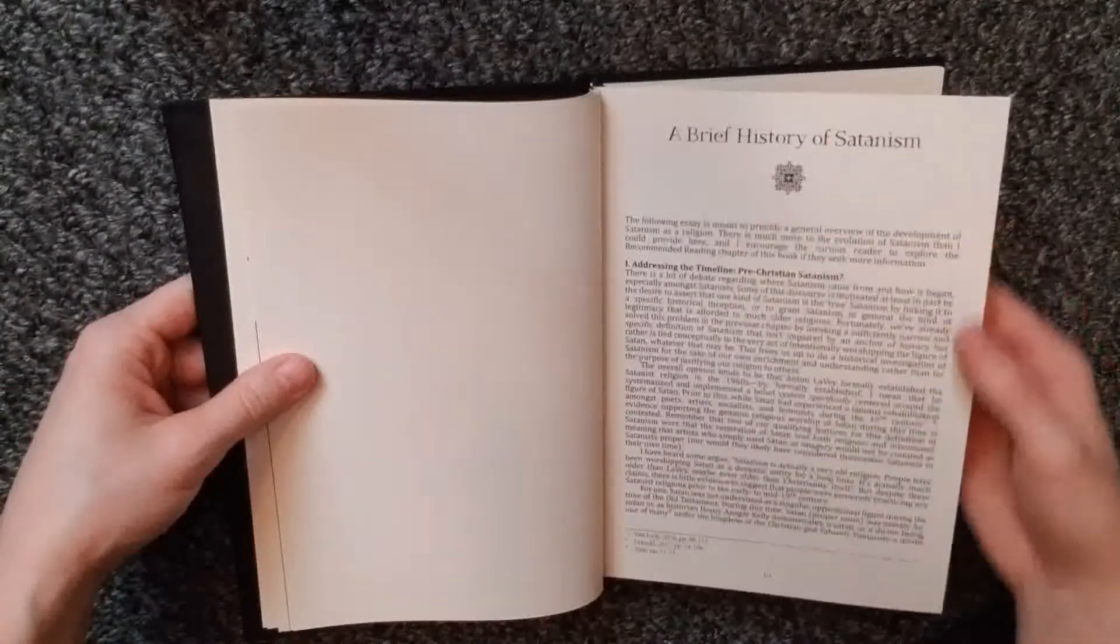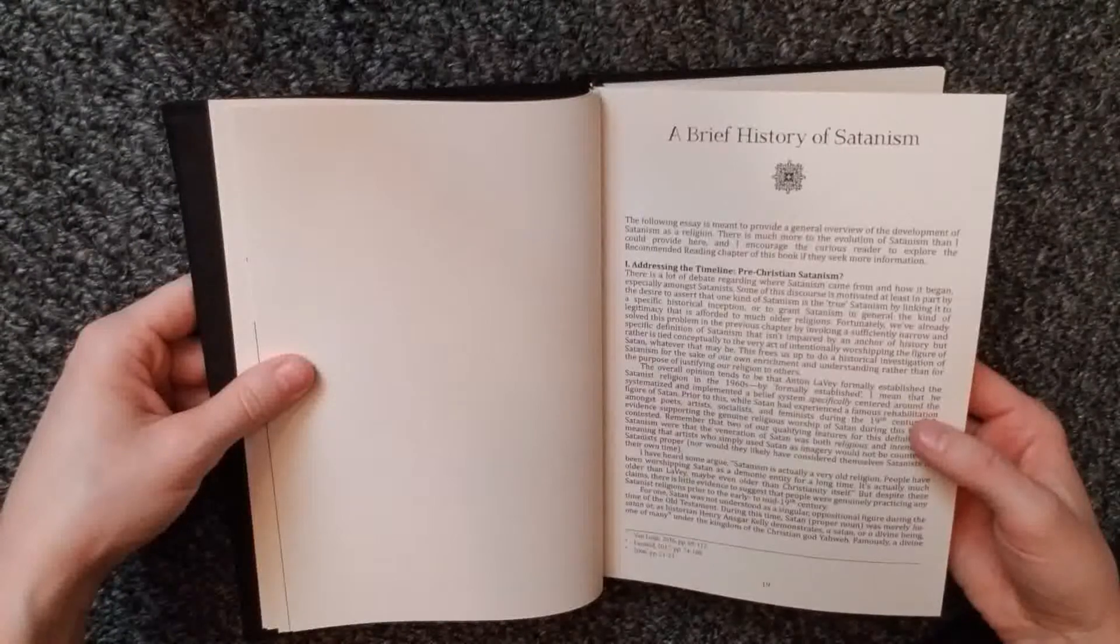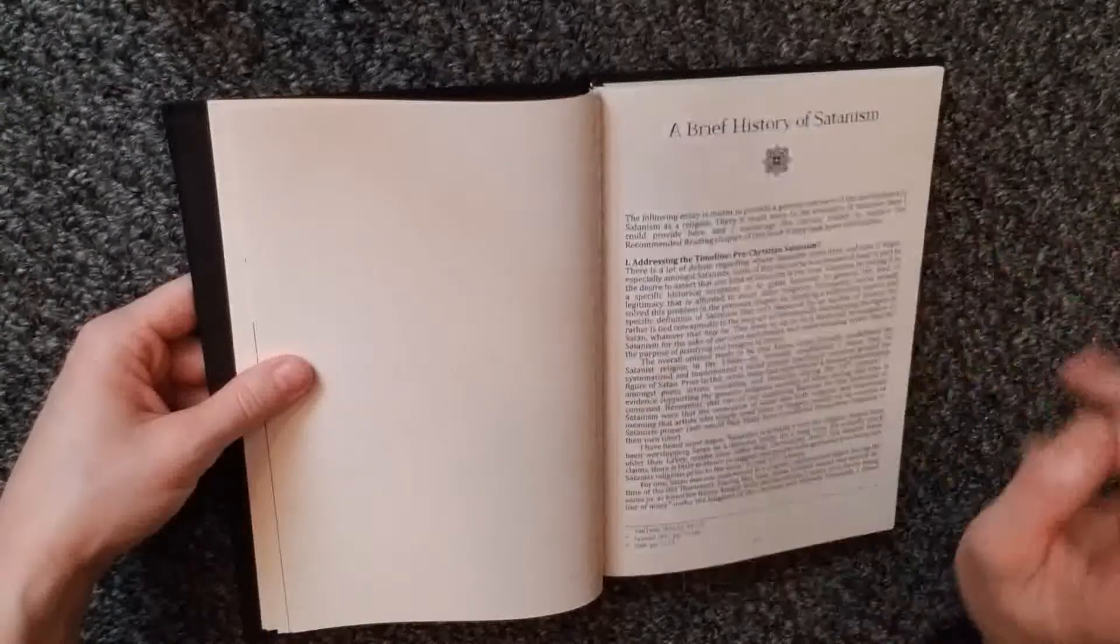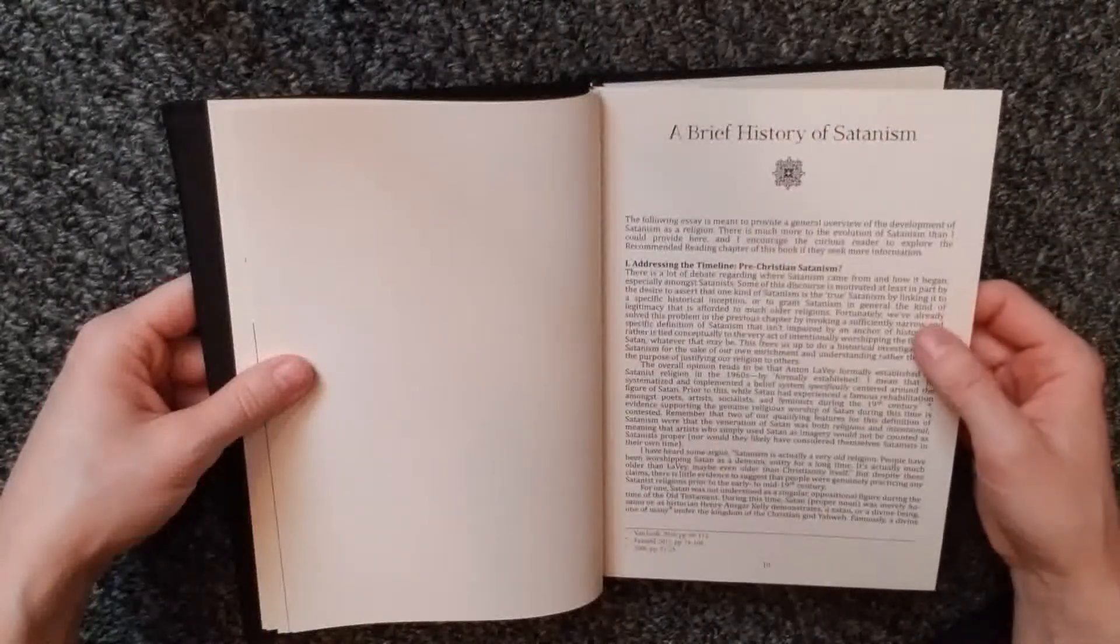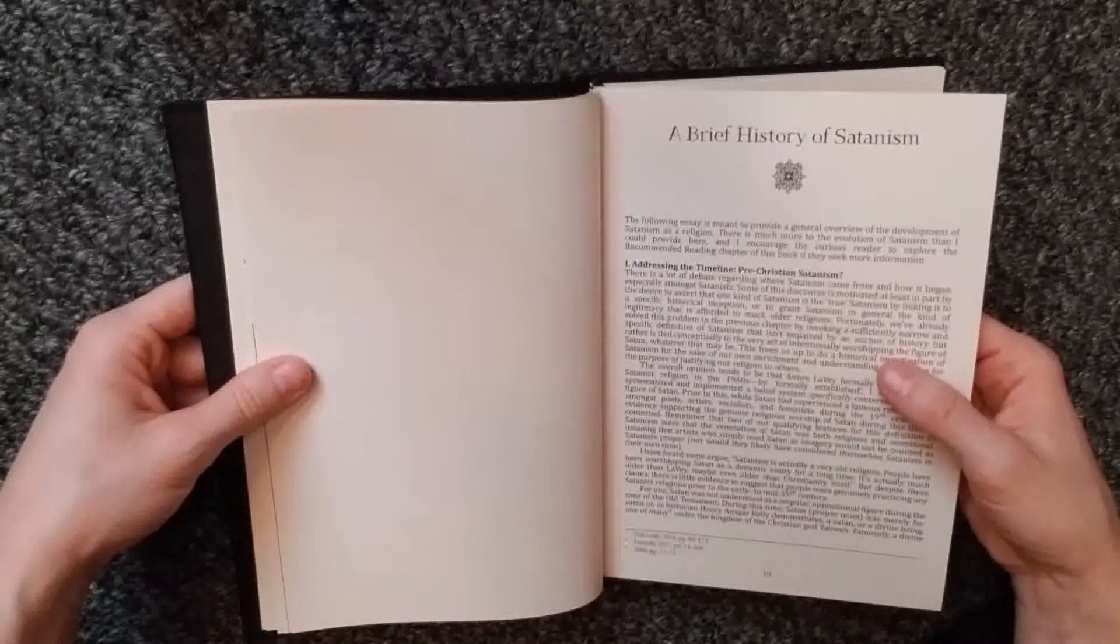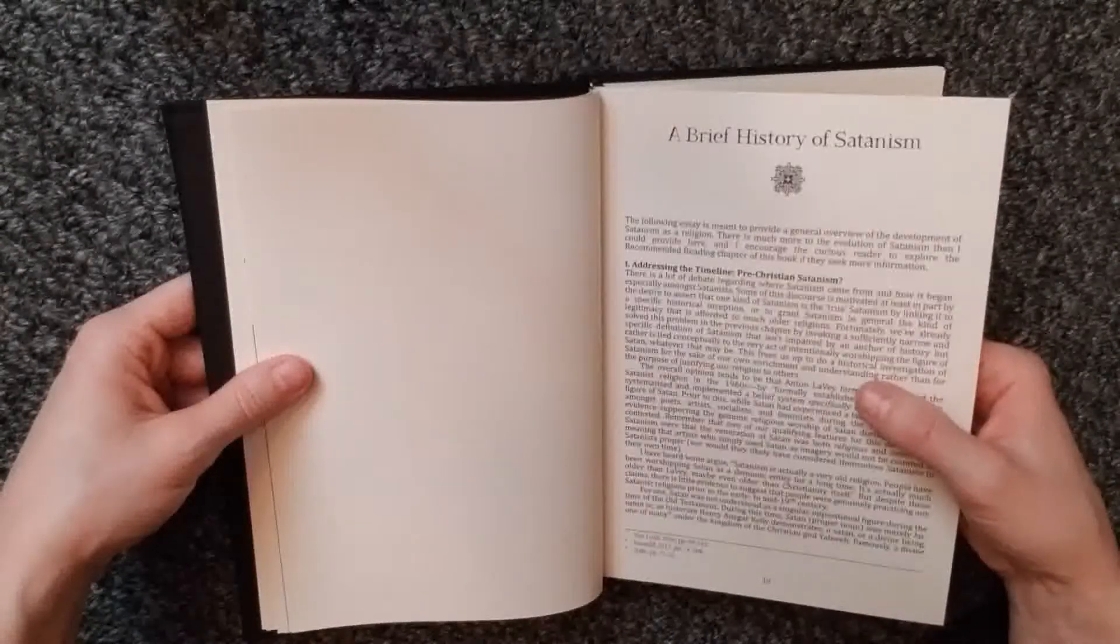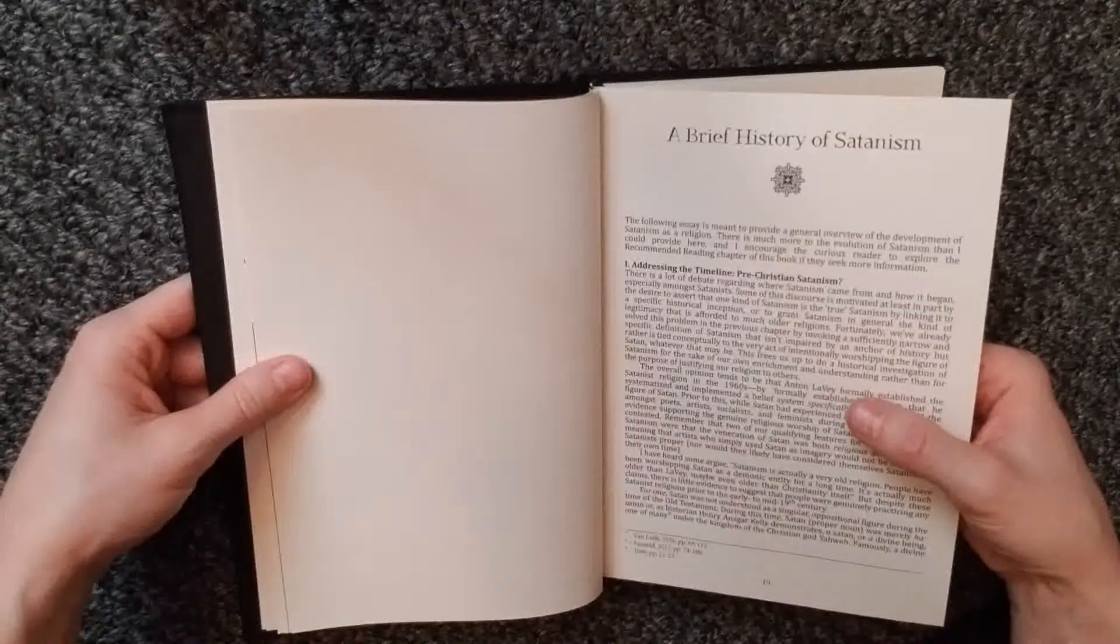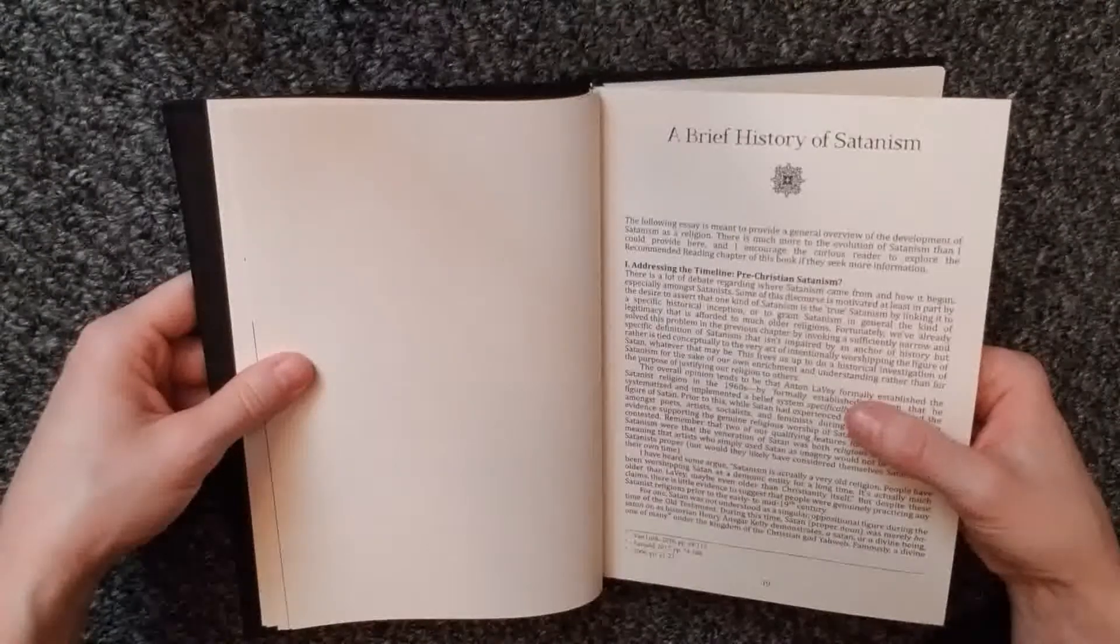Addressing the timeline. Pre-Christian Satanism. The following essay is meant to provide a general overview of the development of Satanism as a religion. There is much more to the evolution of Satanism than I could provide here, and I encourage the curious reader to explore the recommended reading chapter of this book if they seek more information.